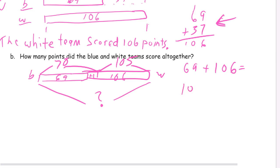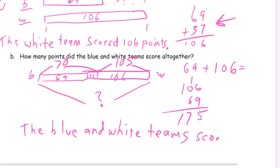Vertically, 106, 69. 15, that's a 10. 7 tens, 175. And either way, the blue and white teams scored 175 total points.